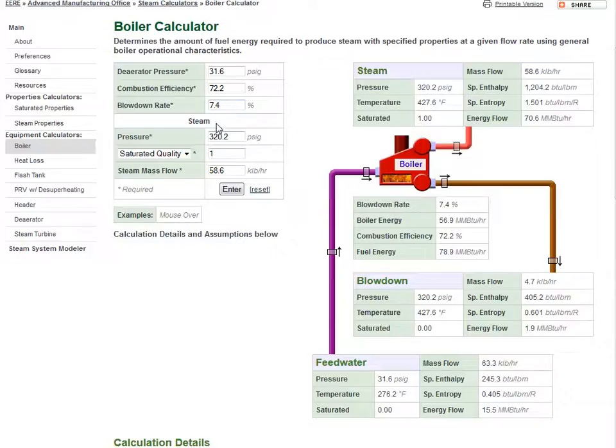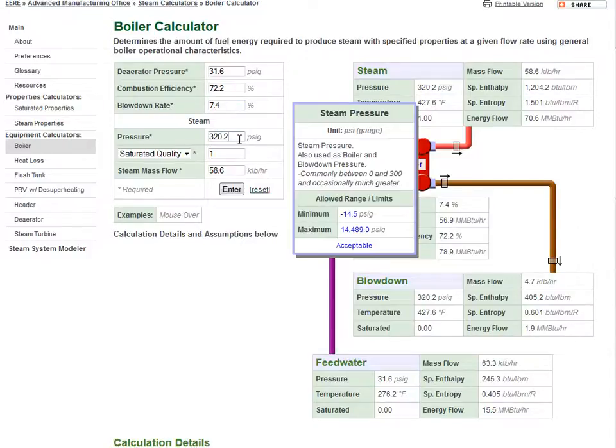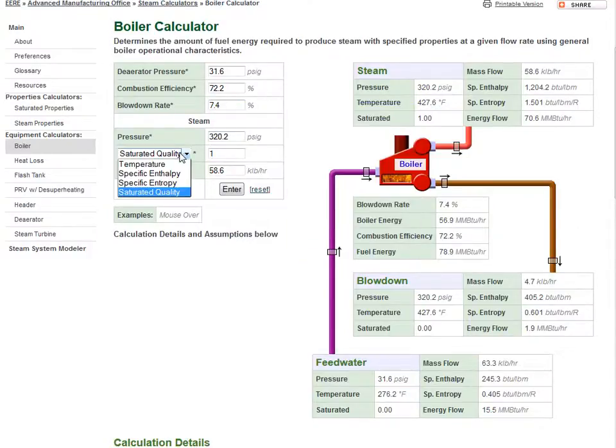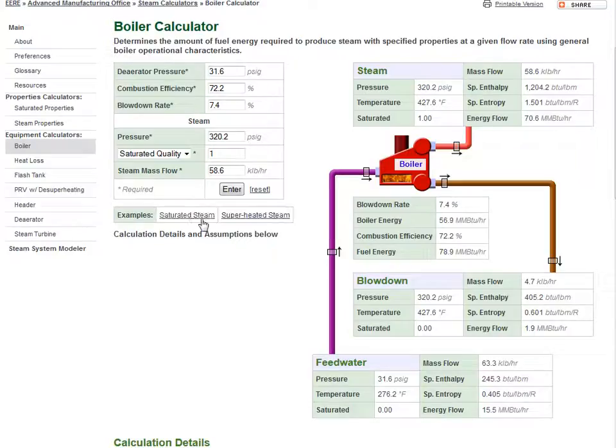The properties of the generated steam are set by pressure, a secondary steam property, and the required mass flow. Two examples are available for the generation of either saturated steam or superheated steam.